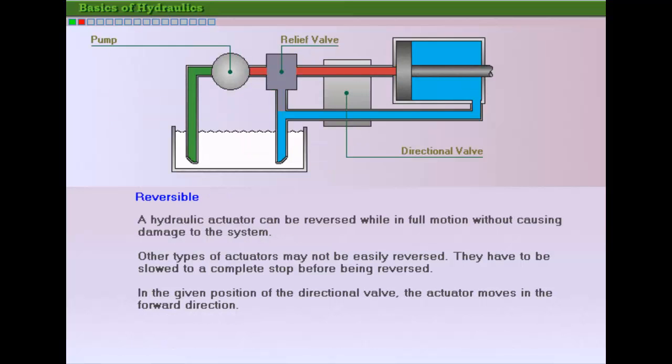Another advantage is that a hydraulic system is easily reversible. Most prime movers are not reversible. The few that can be reversed have to be slowed to a complete stop before being reversed. A hydraulic actuator can be reversed while in full motion without causing damage to the system.